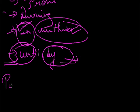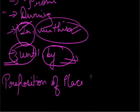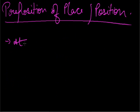Prepositions of place or position. 'At' denotes a position at a point. For example: 'at the center,' 'turn left at the next crossing,' 'at the end of the queue.' 'On' tells us a position on a line, like 'Delhi is on the river Yamuna.'